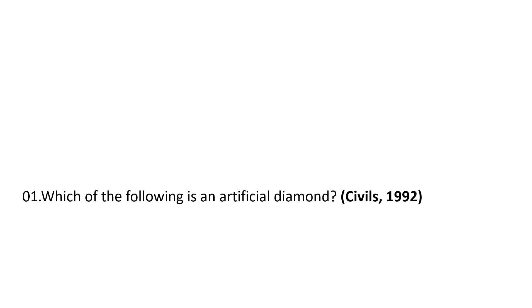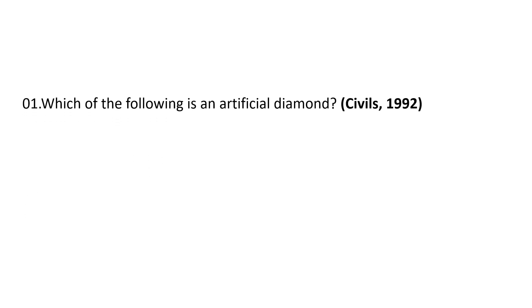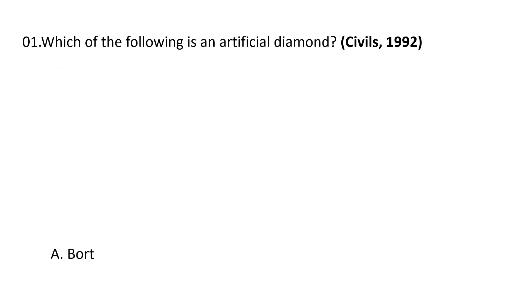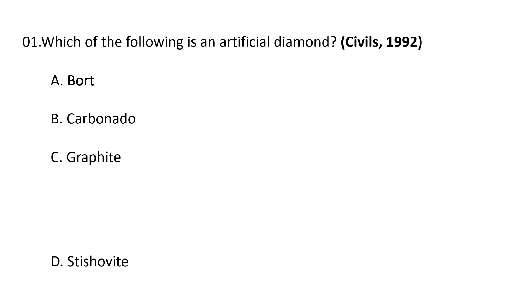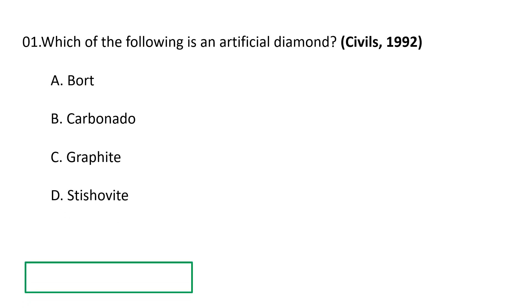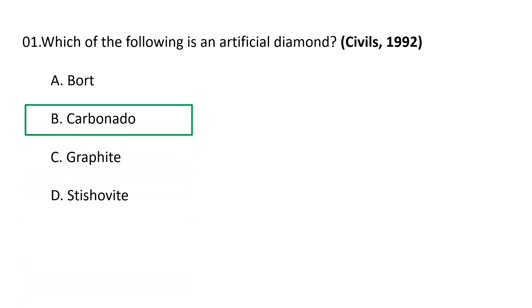Coming to the first question: Which one of the following is an artificial diamond? Choices are A. Bort, B. Carbonado, C. Graphite, and D. Stishovite. The correct answer is B. Carbonado. This is also known as industrial diamond. Graphite contains carbon, stishovite is a form of silica, and Bort is also a type of diamond but it is not an artificial diamond. So correct answer is B. Carbonado.